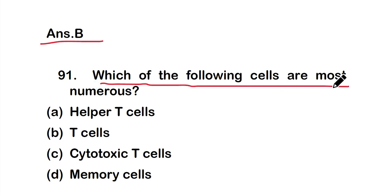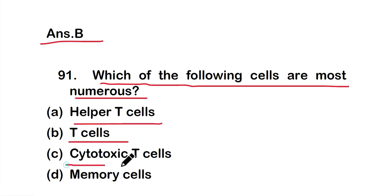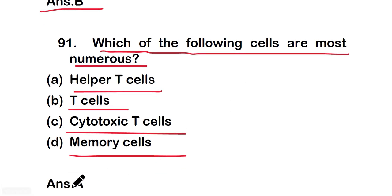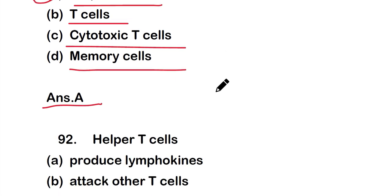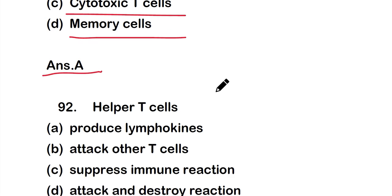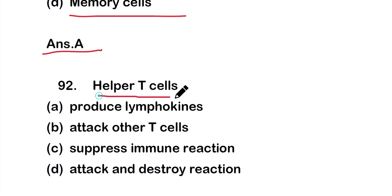Question number 91: Which of the following cells are the most numerous? Option A: helper T cells, option B: T cells, option C: cytotoxic T cells, option D: memory cells. The right answer is option A — helper T cells are the most numerous.